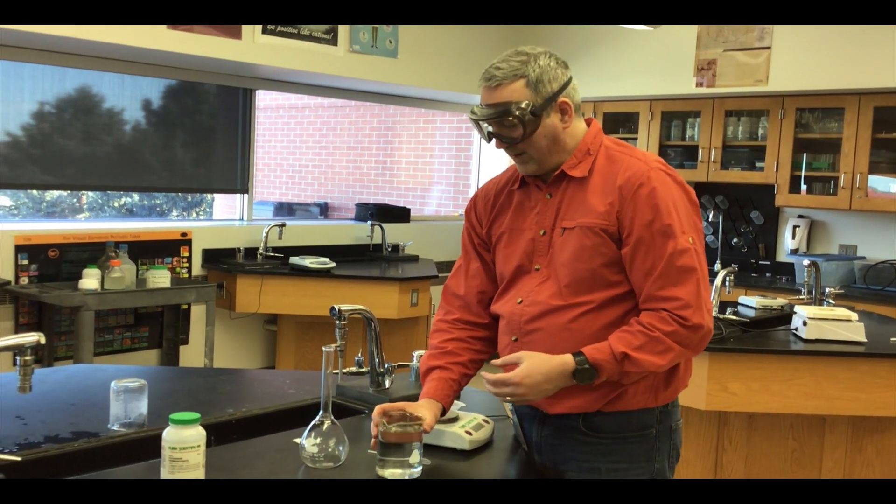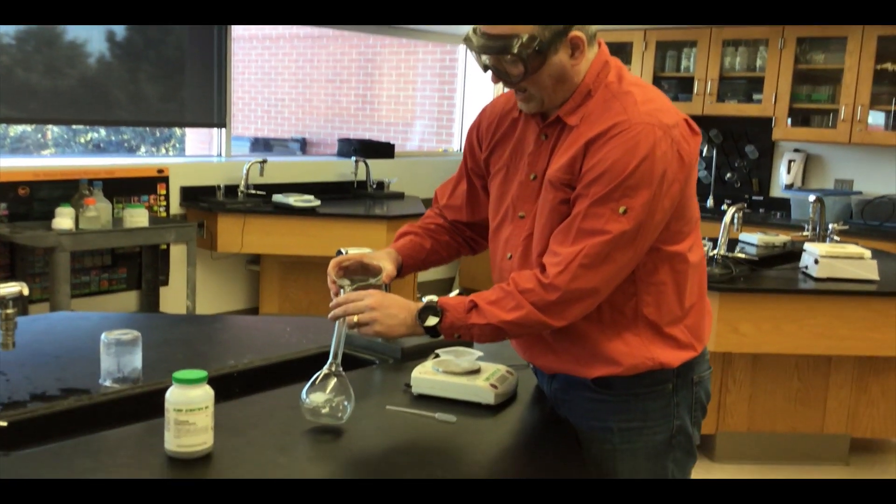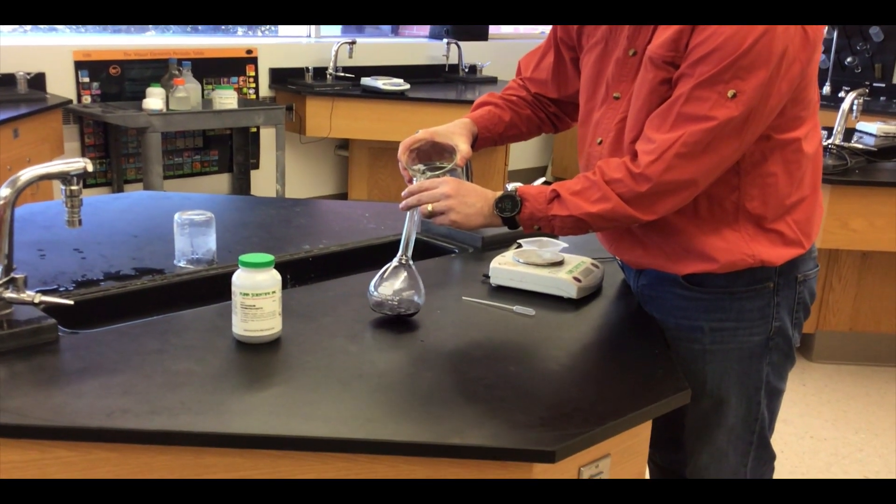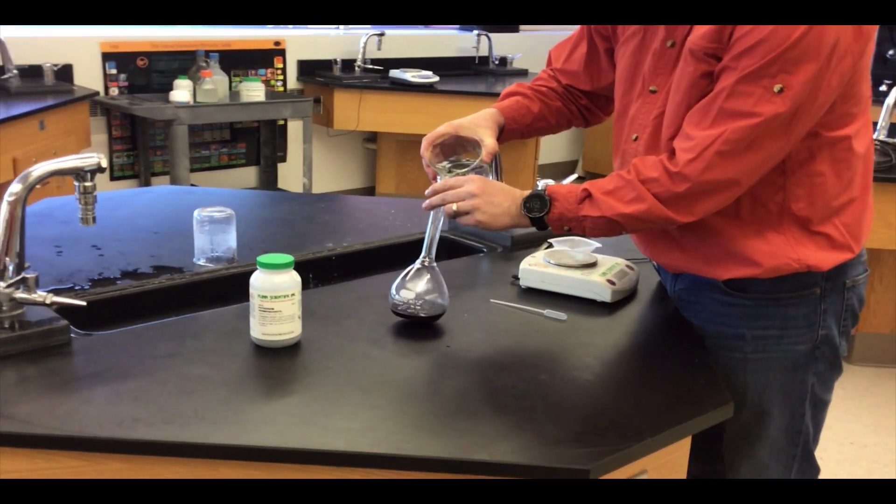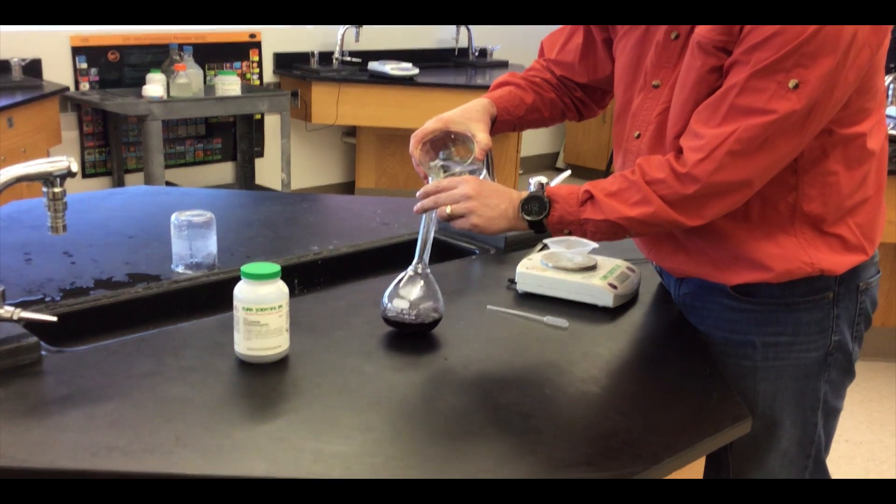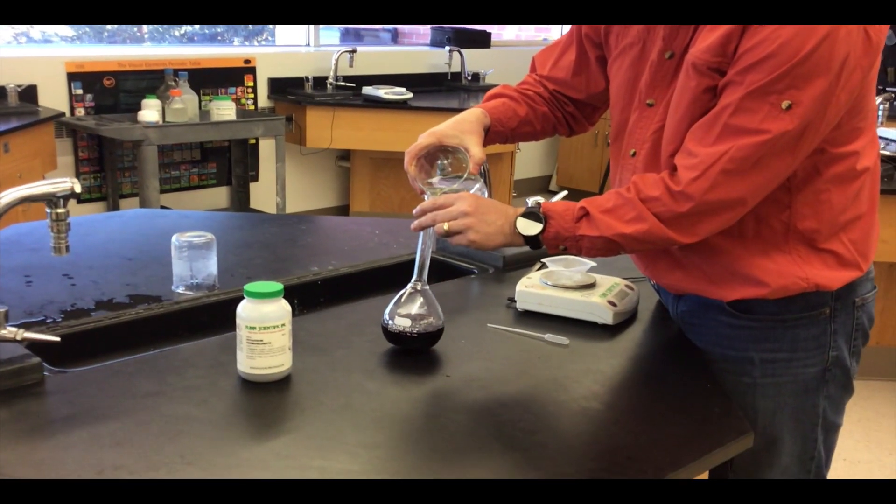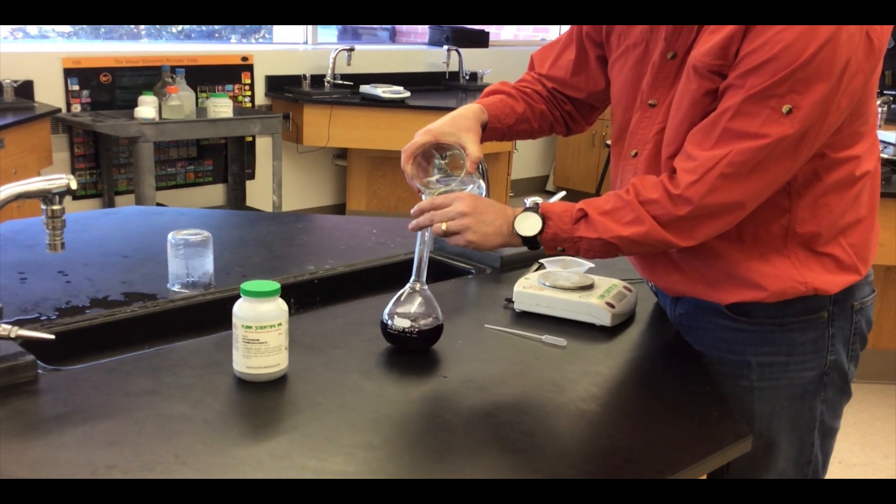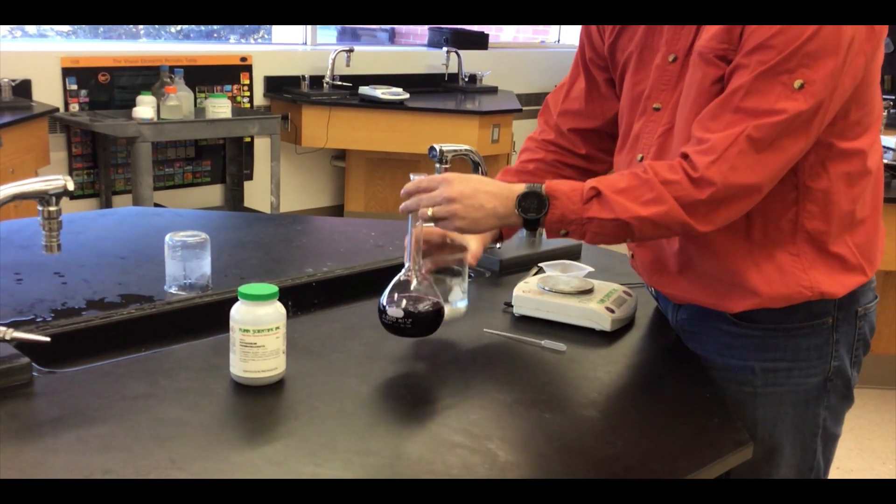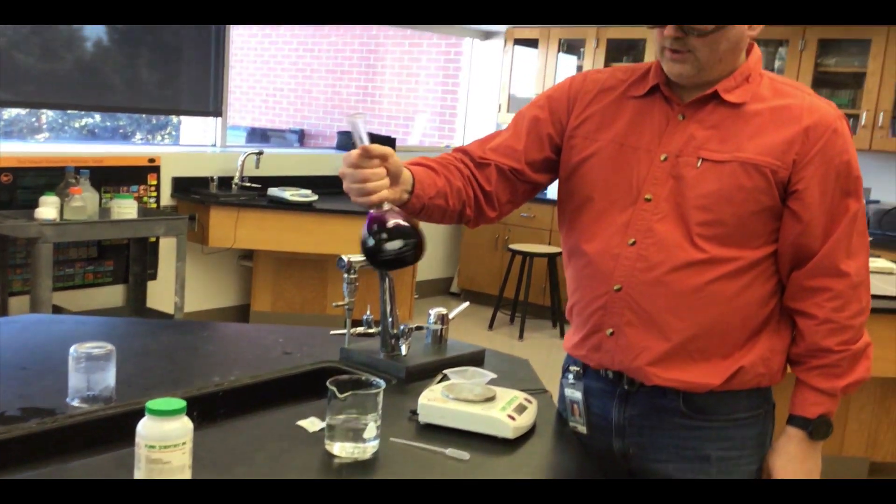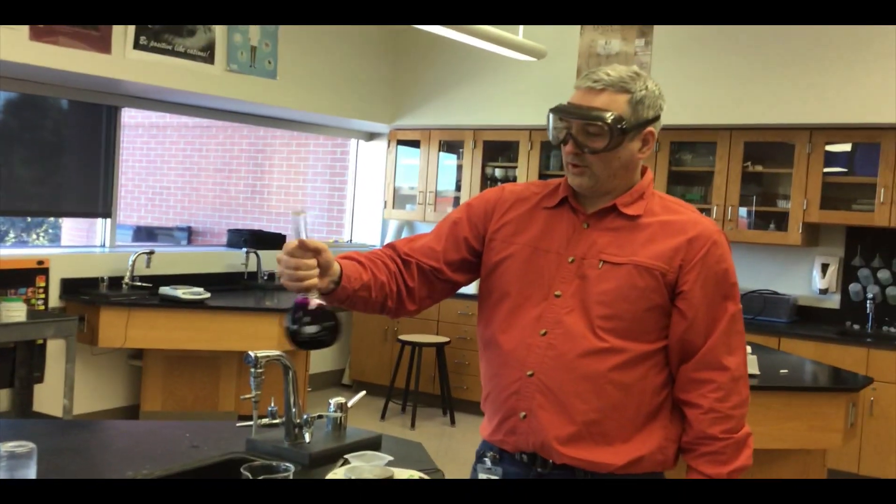So we're going to mix it first by adding some of this into the flask. It's a nice purple color. We're going to add enough in there so we can still swirl it around, so about halfway up, and then we're going to swirl it and make this solution.